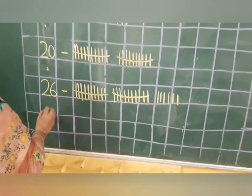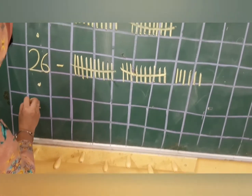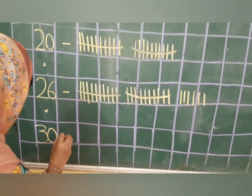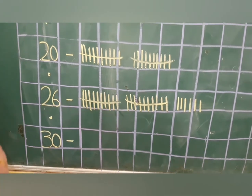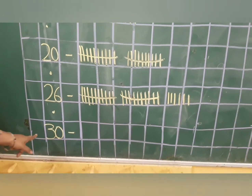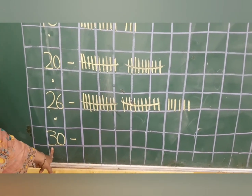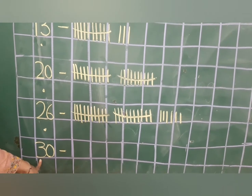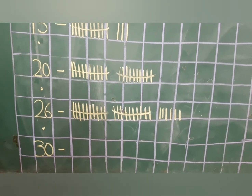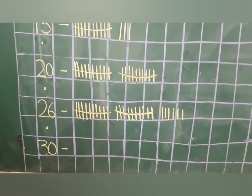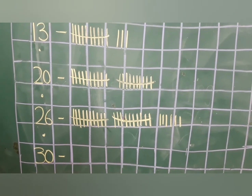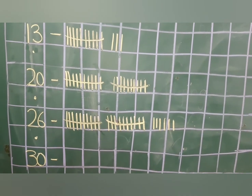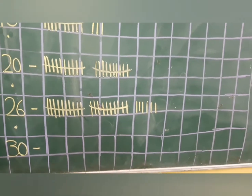Now we will come to the last number. Which number is this? Thirty. Very good. So what is there on tens place? Three. So how many bundles are we going to make? Three bundles. Very good. How many sticks are in a bundle? Ten. Very nice.